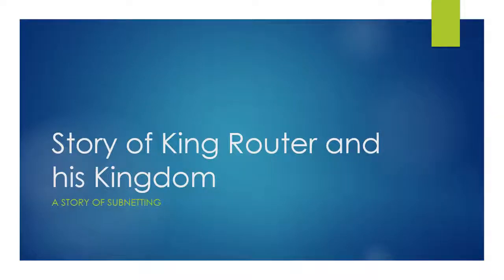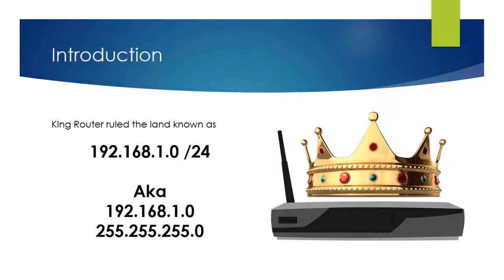This is how to subnet using the story of King Router and his kingdom. King Router ruled the land known as 192.168.1.0/24, also known as network address 192.168.1.0 with a subnet of 255.255.255.0.